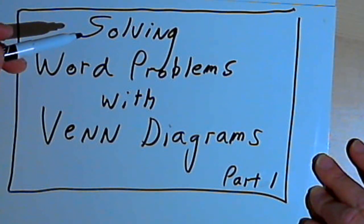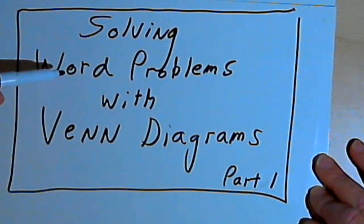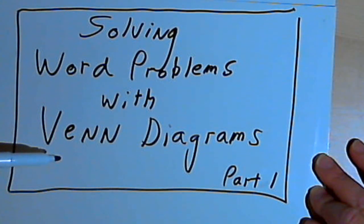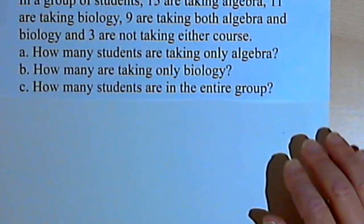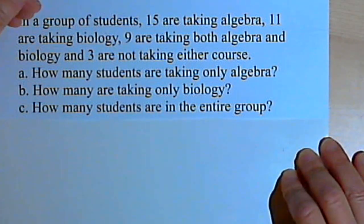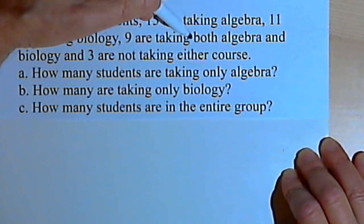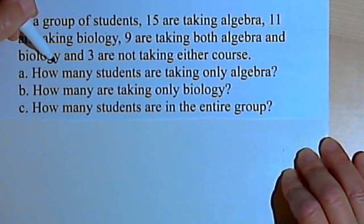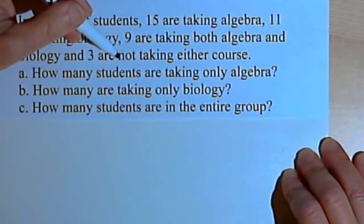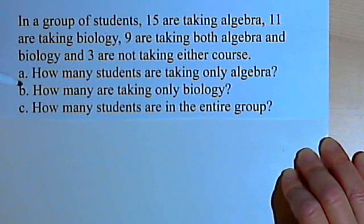This is going to be the first of two videos about solving word problems with Venn diagrams. So here's the first problem. In a group of students, 15 are taking algebra, 11 are taking biology, 9 are taking both algebra and biology, and 3 are not taking either course. And now we've got three questions.